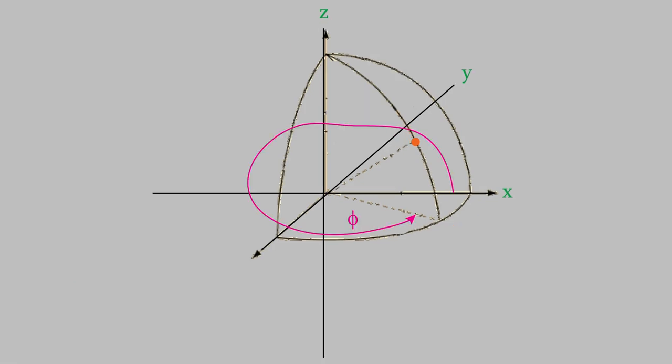The third coordinate is phi, which is the angle in the xy-plane we need to reach in order to be directly above or below the point we're interested in. As you're probably familiar with if you've taken a trigonometry class, we measure the angle by moving counterclockwise from the positive x-axis. So, the value of phi is always between 0 and 2 pi.